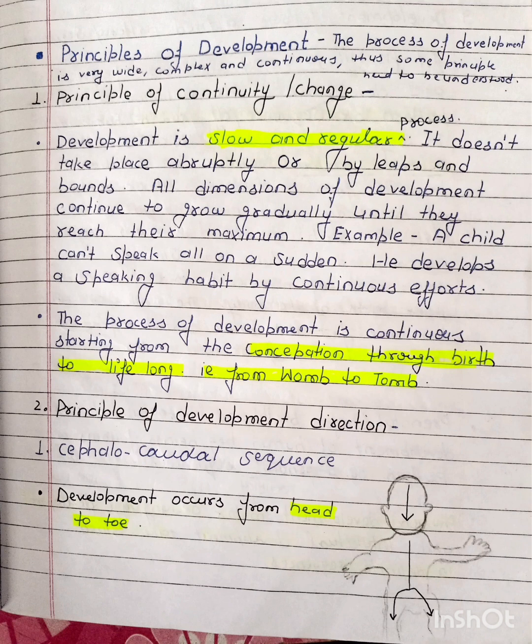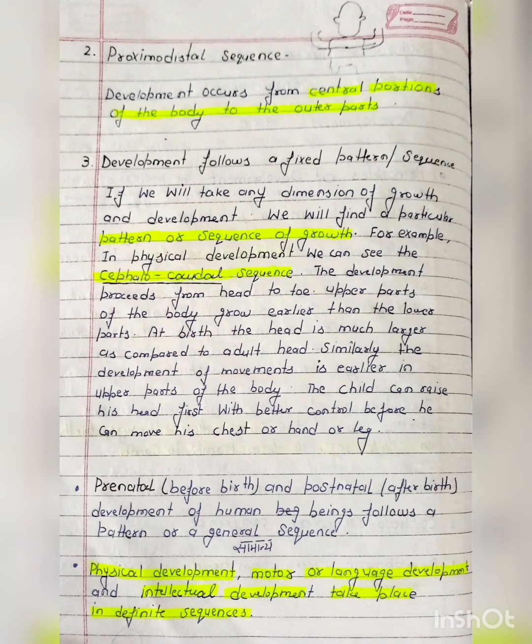The second principle is the principle of development direction. There are two directions. The first is the cephalocaudal sequence — development proceeds from head to toe. The second is the proximodistal sequence, which occurs from the central portion of the body outward to the outer body.